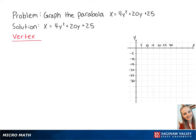Since the equation is in terms of y, the vertex formula is reversed. So we get y equals negative 20 over 2 times 4, which is equal to negative 2.5. If we plug negative 2.5 into the original equation, we get x equals 4 times negative 2.5 squared plus 20 times negative 2.5 plus 25, which is equal to 0. So the vertex is at 0, negative 2.5.